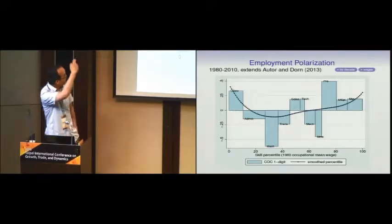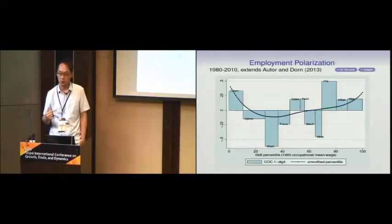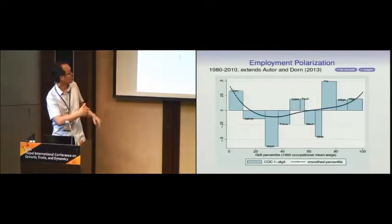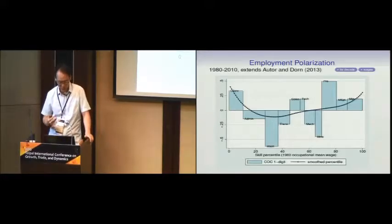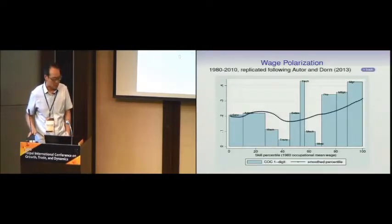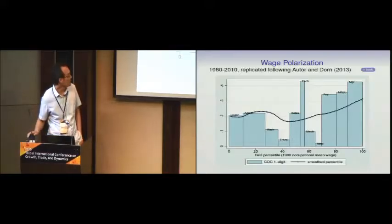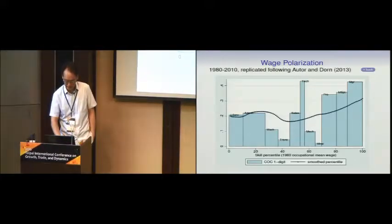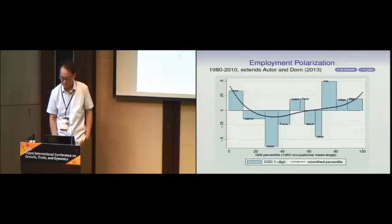The dotted line is the original version from Autor and Dorn, which we extend to 2010 — they ended in 2005. There's a similar pattern in a much finer occupation classification showing the U-shape polarization pattern. A similar pattern exists for wages: sort occupations by 1980 average wage and look at how much average wage increased in each occupation. You see the far ends increased a little more than the middle. That's a slightly weaker pattern in wage polarization, but this is fairly well-established empirical analysis.